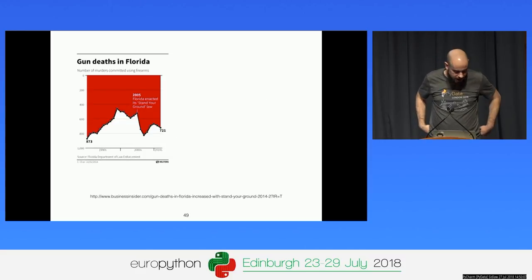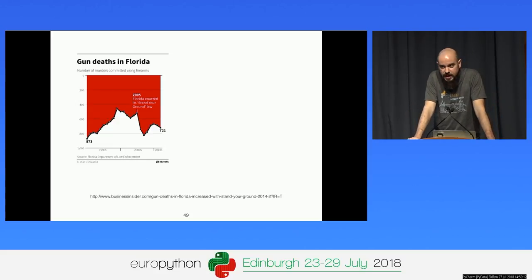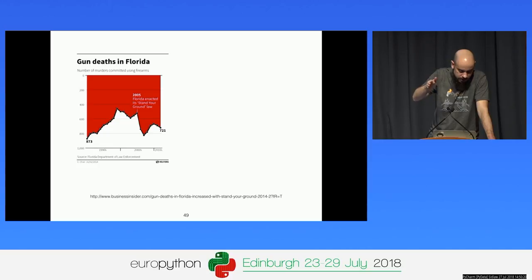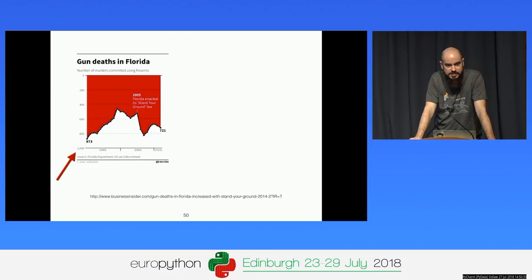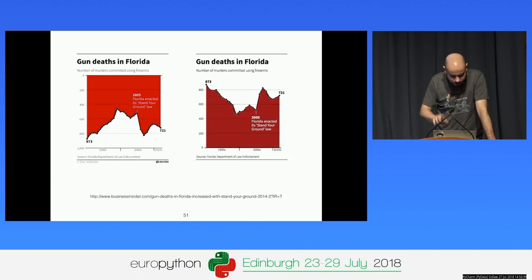Guns in the US — a very hot topic. In 2005 in Florida, they introduced the Stand Your Ground Law. On the graph representing the number of murders committed using firearms, when the law is introduced there appears to be a drop. But for some reason, the vertical axis starts from 1,000 and goes down. Once you fix the plot, reality is literally upside down. This was published in Business Insider; the original visualization was by Reuters.